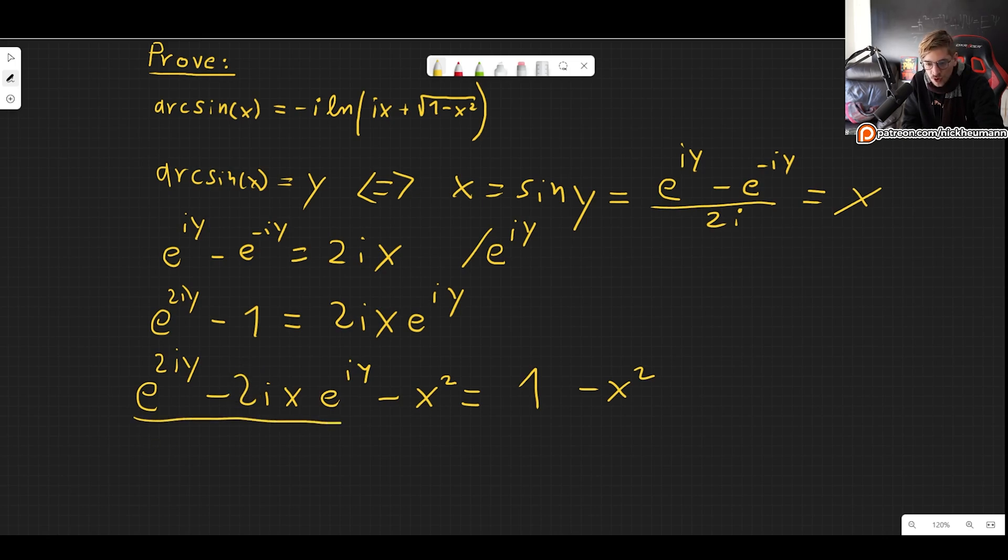So what we have right there is simply a perfect square. So that is e to the iy minus ix. And all this is squared.